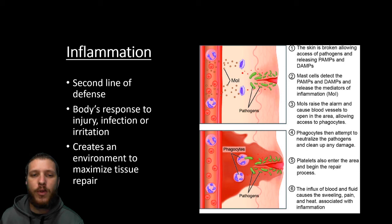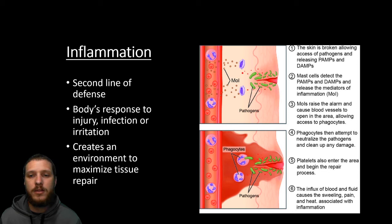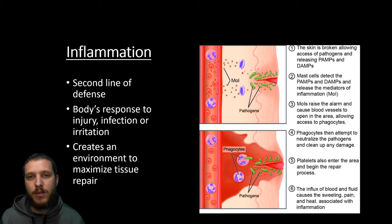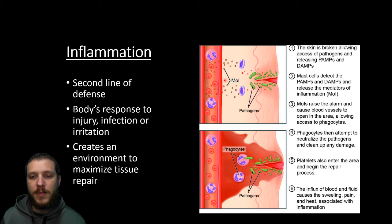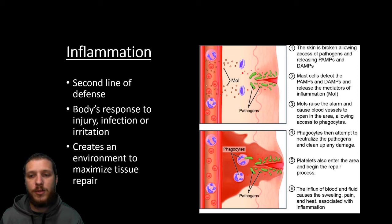Inflammation is the second line of defense — the body's response to injury, infection, or irritation, creating an environment that maximizes tissue repair. The signs are swelling, redness, and heat. Blood vessels dilate, causing redness by bringing blood closer to the skin, and allowing more white blood cells to reach the area to fight infection. Along with dilation, vessels become more permeable to let white blood cells leak out into the area — this causes the swelling. The heat comes from the excess blood in the area. Pain sensitizes the nociceptors, discouraging touching the area or introducing more pathogens.